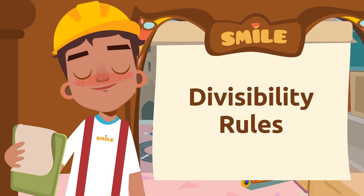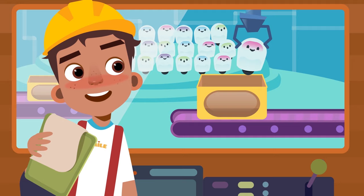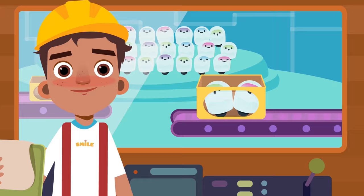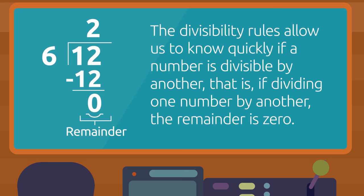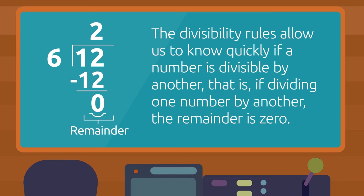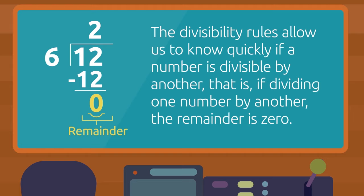We call them the divisibility rules, and I'll tell you about some of them. Look at how many robots there are. We want to put two in each box, but we need to know if there will be any left over. We can't send any boxes with only one robot. To find out, we'll be using the divisibility rules. The divisibility rules allow us to know quickly if a number is divisible by another — that is, if dividing one number by another, the remainder is zero.